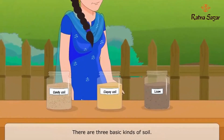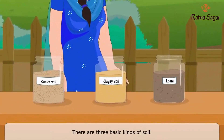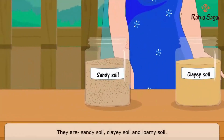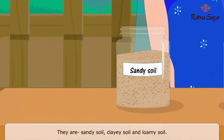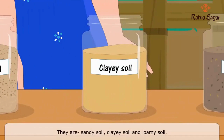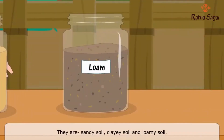There are three basic kinds of soil. They are sandy soil, clayey soil, and loamy soil, also known as loam.